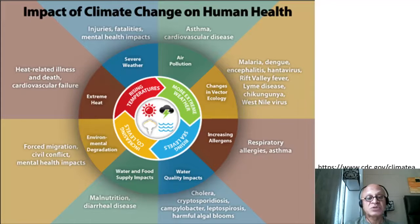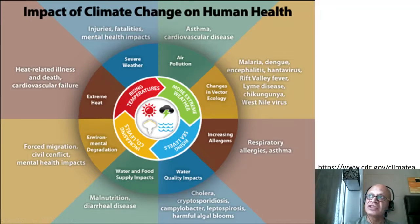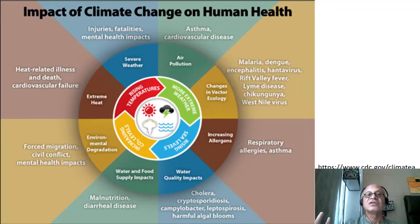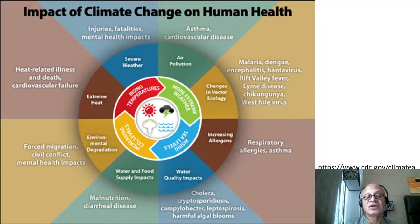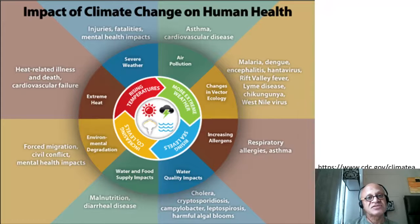Water and food supply impacts: for example, we looked at the impact of Typhoon Haiyan on supply chains across the world. This happens with all cyclones, hurricanes, and typhoons and can lead to malnutrition and diarrheal diseases, especially in developing countries. Another pathway is consuming fish from floodwaters infected by snails carrying schistosomiasis. This cascade of effects is literally infinite.